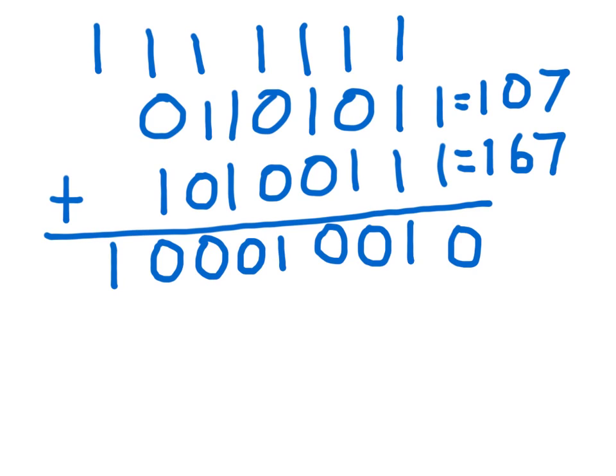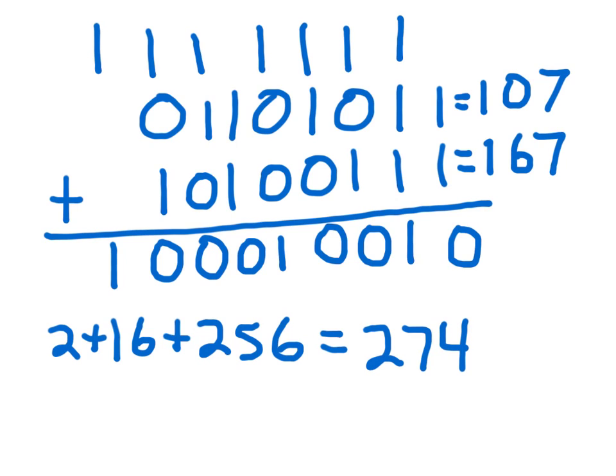So we know what the top two numbers are, and now we can look at the bottom number. We have the ones place, the twos place, so we know there's going to be a 2. Then we have the 4, 8, 16, so we know there's going to be 16. And then 32, 64, 128, and 256. So 256, and if we add that together, we get 274. So all we have to do now is check to see if we're right. So we take 107 plus 167, and sure enough, you will get 274. So that is how you add two binary numbers together.